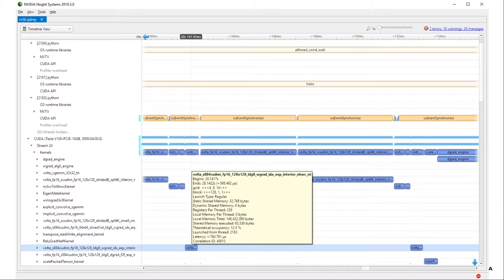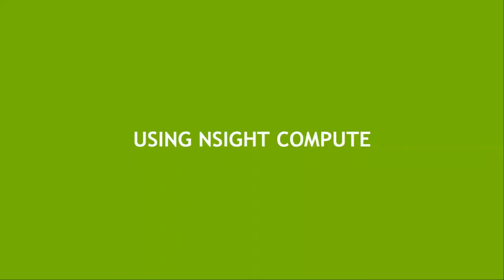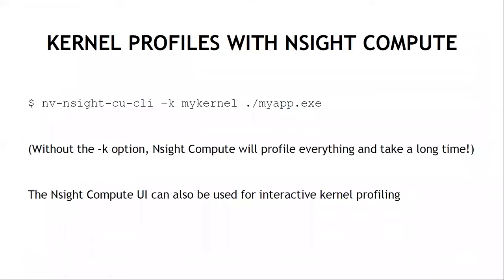The workflow is: use Nsight Systems to find a kernel on your timeline that takes a long time, get its name, then profile it in Nsight Compute. For Nsight Compute, the command-line interface is `nv-nsight-cu-cli` — a mouthful, but it will be in your path if you `module load cuda`. If you just run it on your app without options, it will take a long time because it profiles every kernel, potentially thousands or millions, and automatically reruns kernels up to 50 or 100 times to collect all the profiling information.